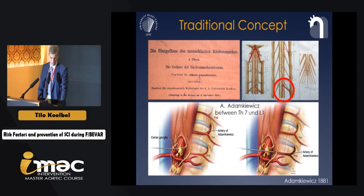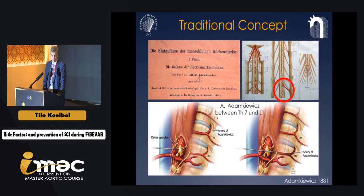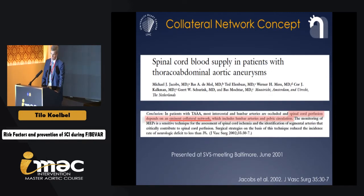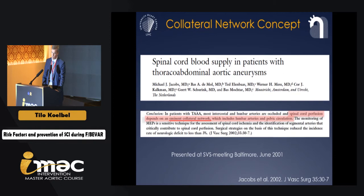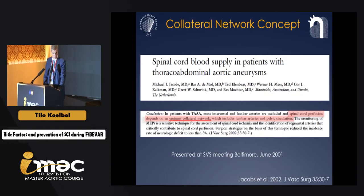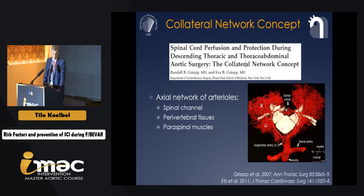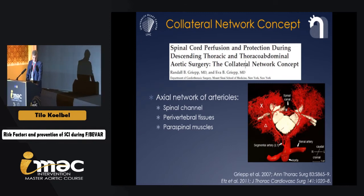The concept of spinal cord ischemia goes back to the work of Albert Adamkiewicz, who defined the lower descending thoracic aorta segmental arteries as the most important contributors to spinal artery flow. More recently, starting with work by Michael Jacobs, experts believe more in the collateral network concept, assuming that a number of different contributing vessels — segmental arteries and others — can contribute to spinal artery flow. This led to well-known work by Randy Grieb and Christian Etz, who framed the term 'collateral network concept.'